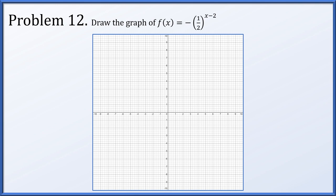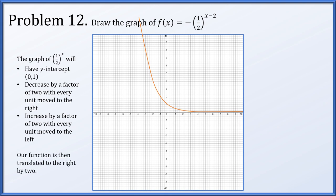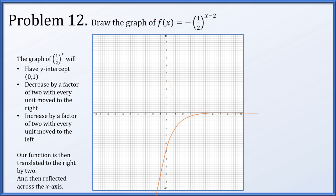Problem 12: draw the graph of f(x) = -(1/2)^(x-2). We begin with (1/2)^x, which has intercept (0,1), decreases by a factor of 2 as we move right (at x=1 height is 1/2, x=2 is 1/4, etc.), and increases by a factor of 2 moving left (x=-1 gives y=2, x=-2 gives y=4). The function never touches the x-axis. Our target function is this graph translated 2 units to the right (x replaced by x-2), and then reflected across the x-axis (multiplied by -1).